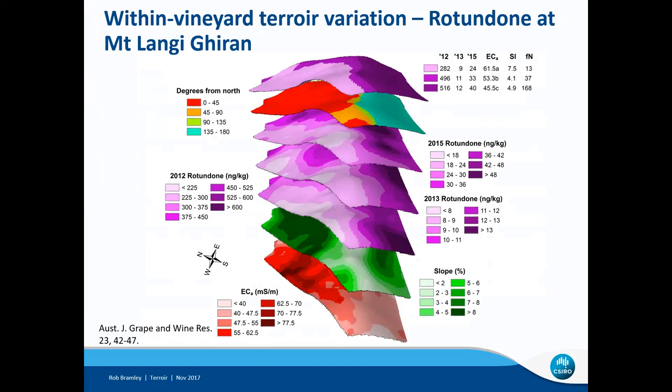Here's a more recent example of within-vineyard terroir variation, relating to some work we did at Mount Langhi Ghiran on variation in rotundone — the compound found in cool climate Shiraz wines that results in those wines having a somewhat peppery characteristic. In this stack of maps we've got a high resolution soil survey, an elevation model from which we derived maps of slope and aspect, and three purple maps of rotundone concentration derived from fairly intensive sampling of fruit throughout that 6.1 hectare vineyard.